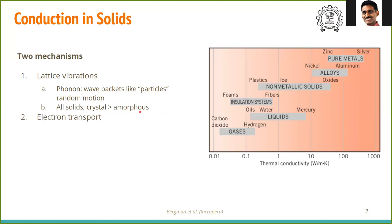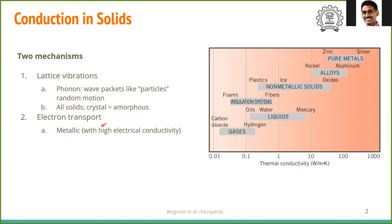Apart from vibration, free electrons carry energy. Free electron motion is high in metallic substances, which have high electrical conductivity, and they also tend to have high thermal conductivity. The reason we see pure metals having the highest thermal conductivity is because of electron motion, which comes from high electrical conductivity. The overall thermal conductivity of any solid can be written as the sum of electronic conductivity and phononic conductivity.